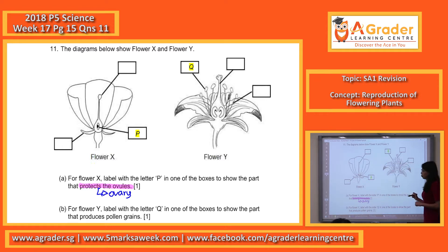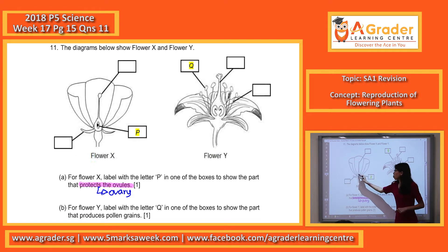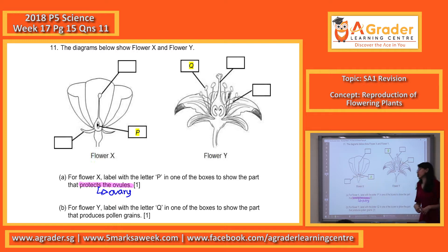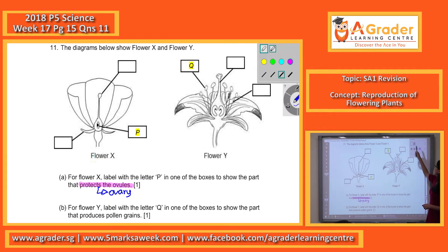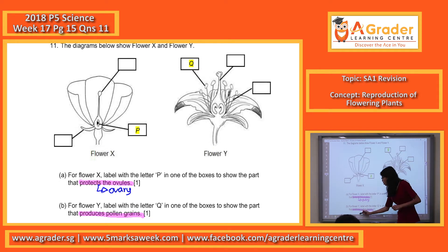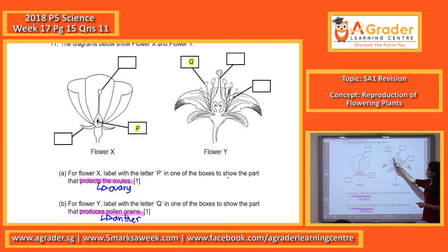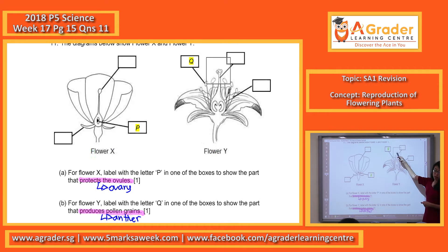Please remember: the ovules are the ones inside. The black-colored dot here is the ovules, which will become the seeds eventually. So next, for the one that produces pollen grains — always remember, the one that produces pollen grains is the flower's male sex cells. It's actually the male part, and it's from the anther. The anther is this part — not the stigma, which is the stick. Make sure you label them correctly.